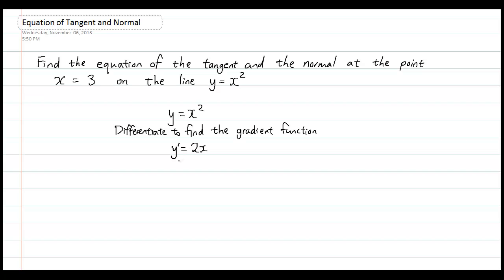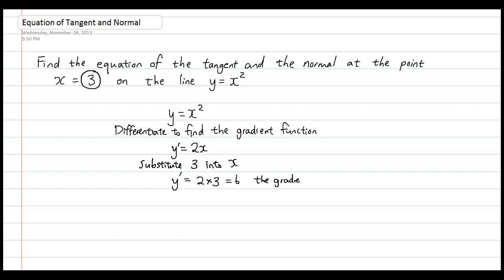y dash gives us the gradient at x equals 3, so we substitute 3 into x. We get y dash equals 2 times 3, which is 6. This tells us that the gradient at x equals 3 is 6.